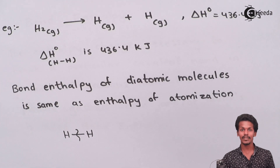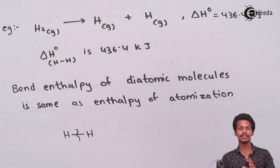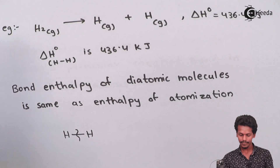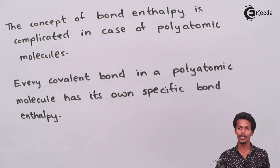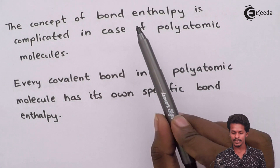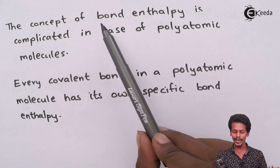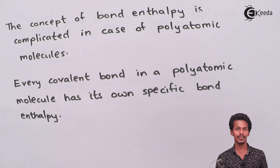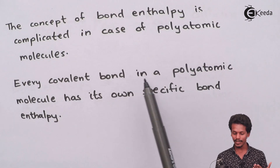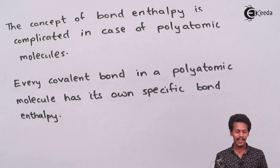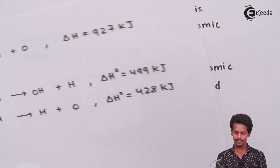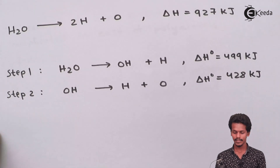However, for a covalent molecule with multiple and different kinds of covalent bonds, the concept becomes more complicated. In a polyatomic molecule, every covalent bond has its own specific bond enthalpy. Let me give an example to explain this.